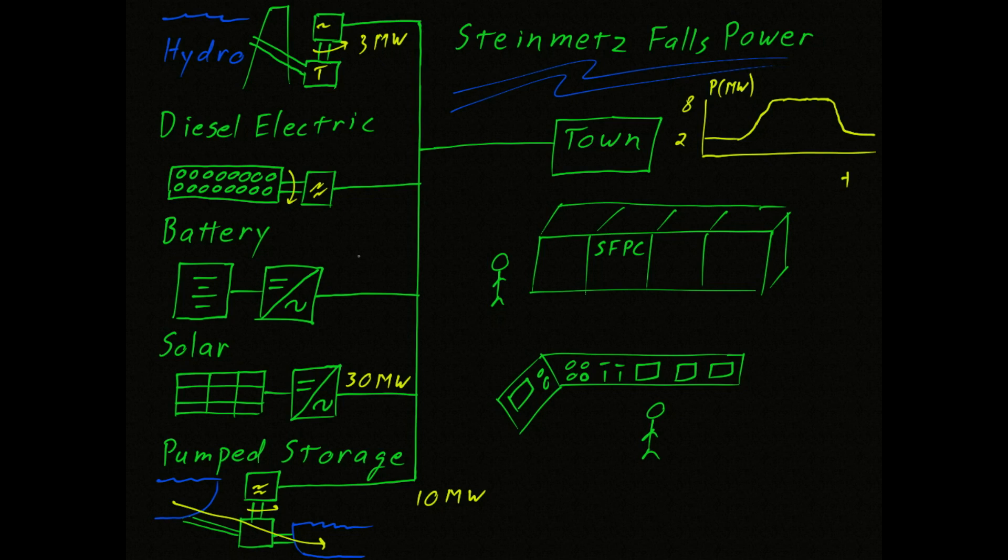The last source of power on our electrical grid is the battery. Now the battery is rated at 8 megawatts, which means it's capable of powering the entire town, but it can only do so for two minutes.